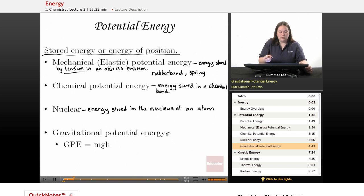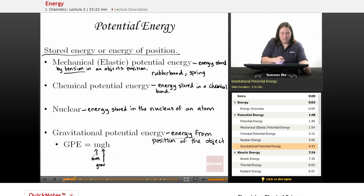And then the last type of potential energy is gravitational potential energy. This is energy that exists. It's stored from the position of the object. And this one has a formula that goes along with it. GPE is the gravitational potential energy equals M for mass, G, this is gravitational acceleration.